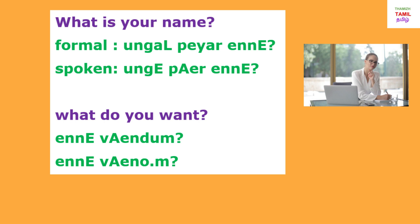For example, in formal Tamil, 'Ungal Peyar Enna' — even if you say that quickly, the words are more clear and round. It is not sloppy and not muted at any place. It is clear. When you come to spoken Tamil, the pronunciation shifts noticeably — this is a clear example of how the spoken language has evolved.